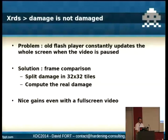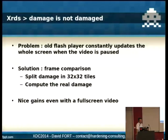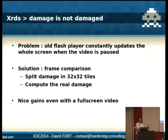We also had a problem I called 'damage is not damage.' We had an old Flash player that we couldn't update, and when you pressed pause it was constantly sending damage even if nothing was changing. So we implemented a very trivial frame comparison algorithm — it splits the damage into small tiles, computes the real damage, and sends only the real damage. We had really nice gains with that — even when looking at a full screen video you can have around 20% gain.